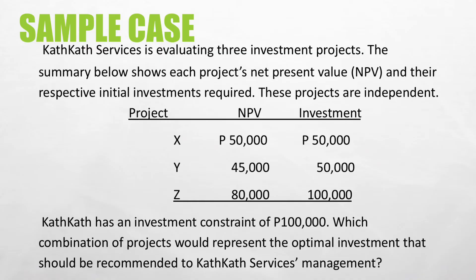Let us refer to the following sample case. Cat-cat Services is evaluating three investment projects. The summary shows each project's net present value and their respective initial investments required. These projects are independent. We have three projects — X, Y, and Z — with their NPV profiles and investment amounts. Cat-cat has a capital rationing constraint of $100,000. Which combination of projects represents the optimal investment to recommend to management?